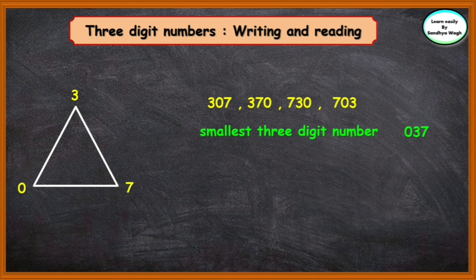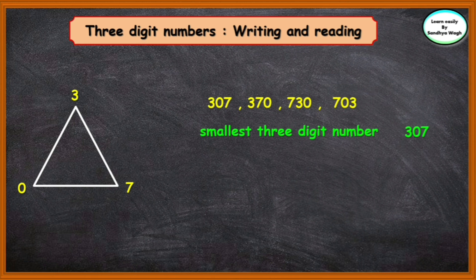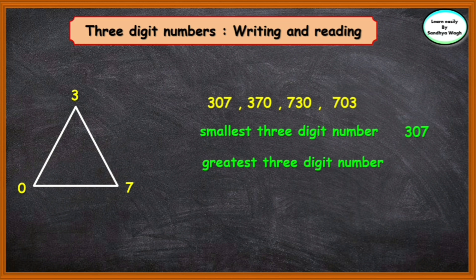To form the smallest three-digit number using the given digits, arrange them in increasing order. Here 0 is smaller than 3, and 3 is smaller than 7, giving us 0, 3, 7. But this would be a two-digit number. So we interchange the position of the first two digits — that is 0 and 3 — to get the smallest three-digit number, which is 307.